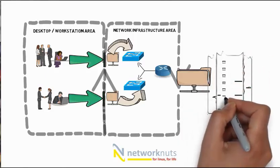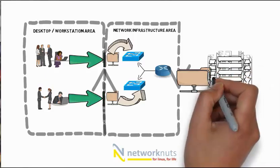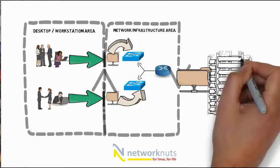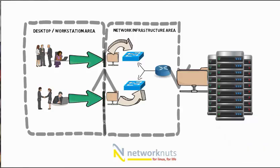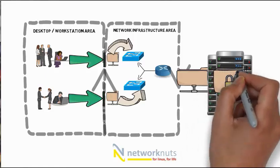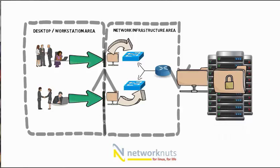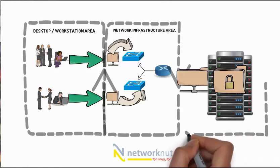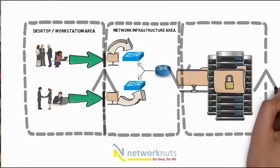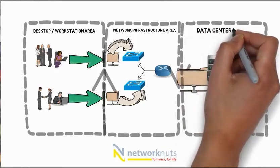Where is the data going? This is the most important part of a company. A company is logically divided into three parts: one is the desktop or workstation area, another is the network infrastructure area, and the third — these are the servers where the company actually stores their customers' critical data. Security here is the prime concern, because you wouldn't want your bank account data compromised.